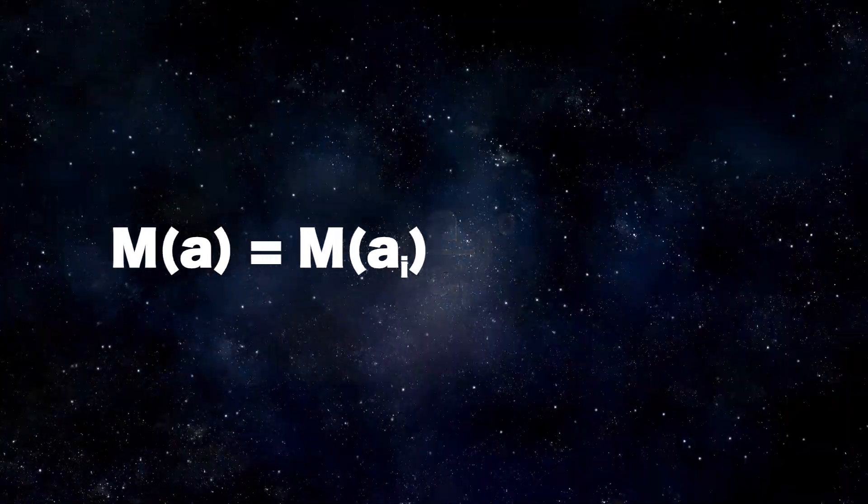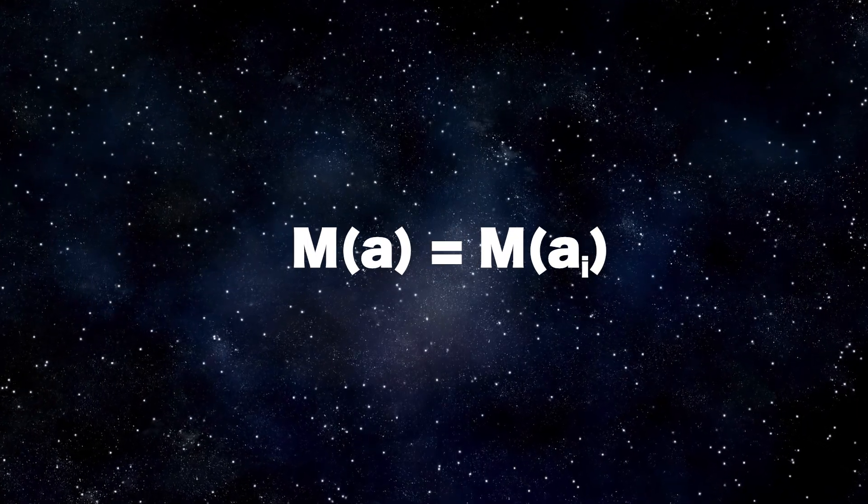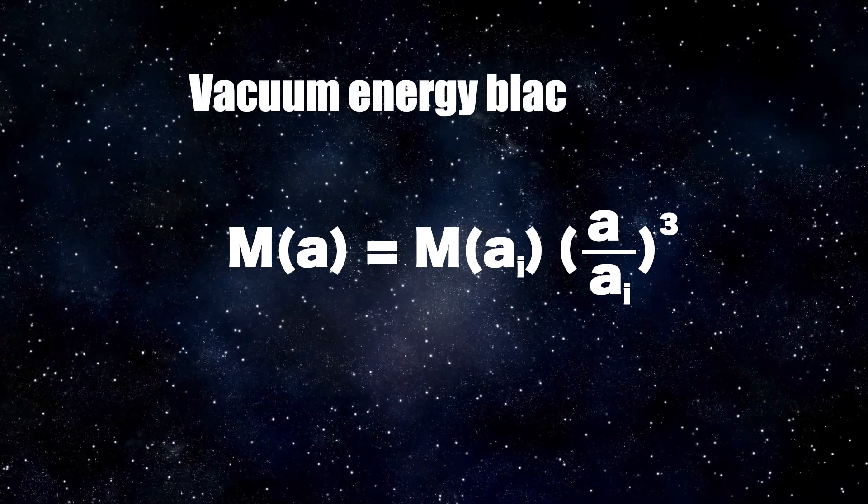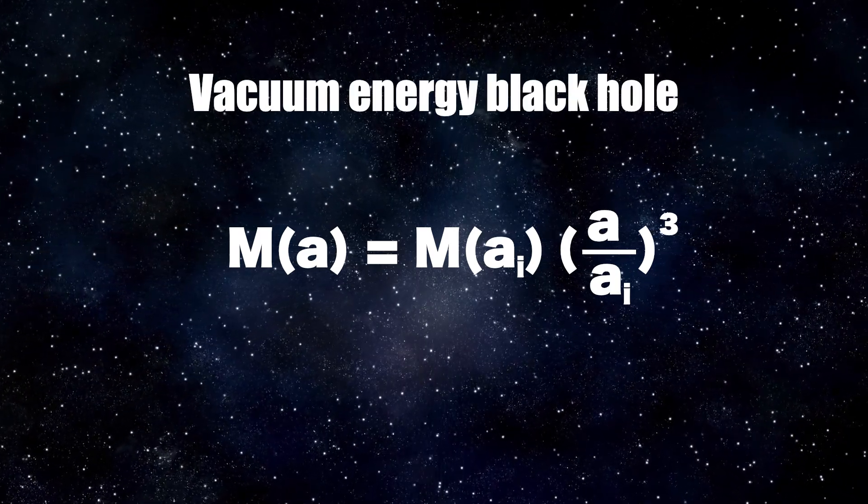You can see that if K equals zero, then the mass of the black hole doesn't change. On the other hand, vacuum energy interior solutions to the field equations produce K equals three.